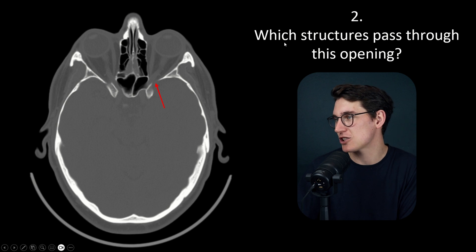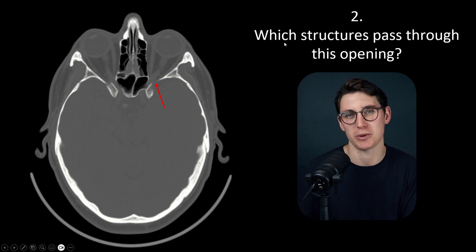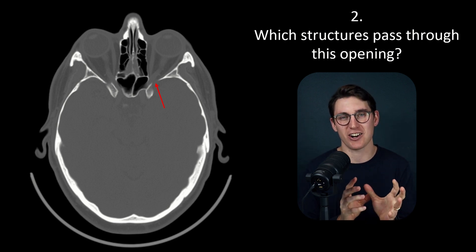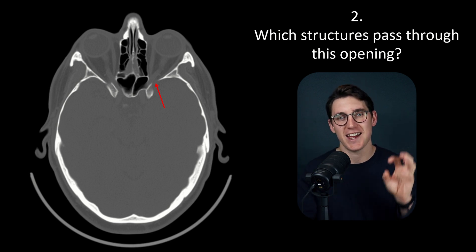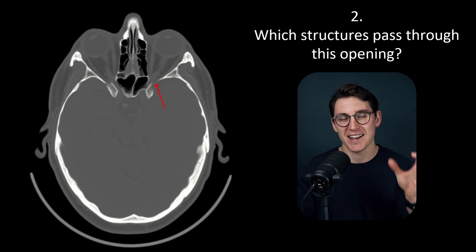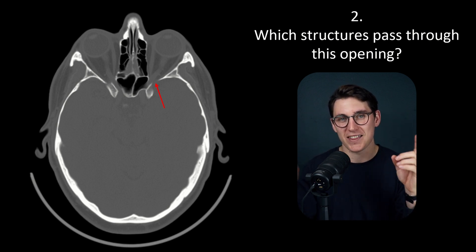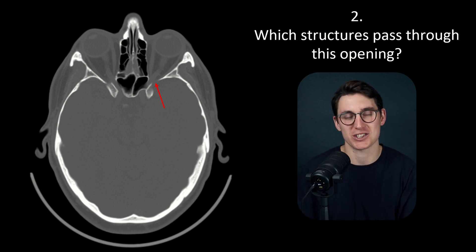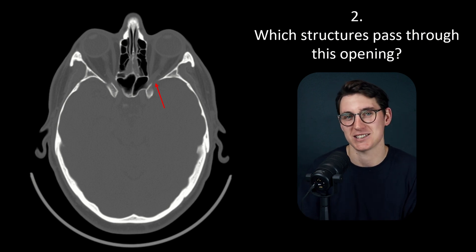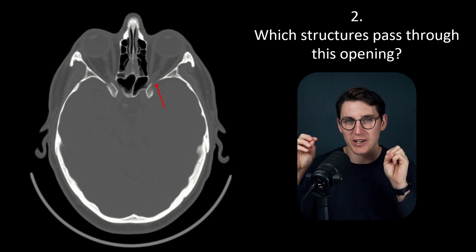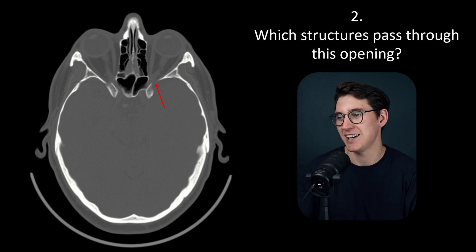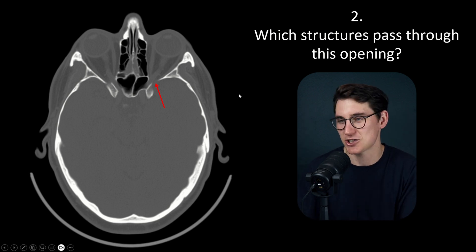In question two, we're asked which structures pass through this opening. If you're going to rote learn anything in neuroanatomy, I'd highly encourage you to go through every fissure, canal, and foramen that exits the cranial vault and learn which structures pass through those openings. These are common questions that come up in every neuroanatomy exam, especially regarding the cranial nerves. Knowing how the cranial nerves pass from the central nervous system out to the periphery is very high yield.